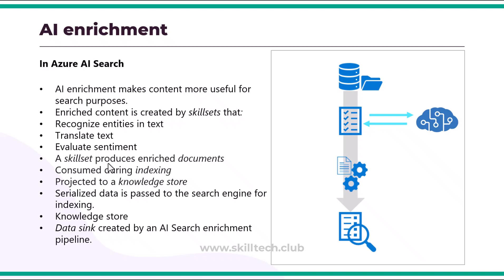Once enrichment is complete, the output is available as a knowledge store containing the configurational data. This data is serialized and passed into a search engine for indexing — this is where the indexer and indexing come into play. Based on the configured skillsets, you can configure indexes with multiple indexes stored inside. These are similar to column store indexes in SQL databases, helping you search specific content. The data written from these indexes is typically in JSON format, which can be incorporated into any application.